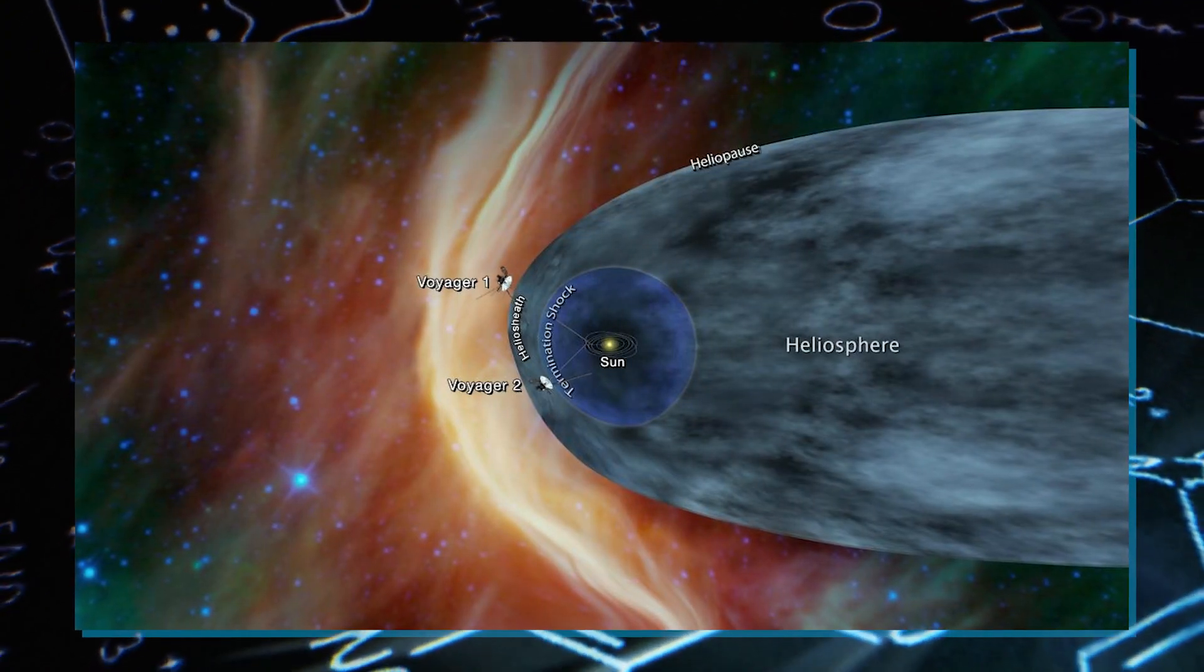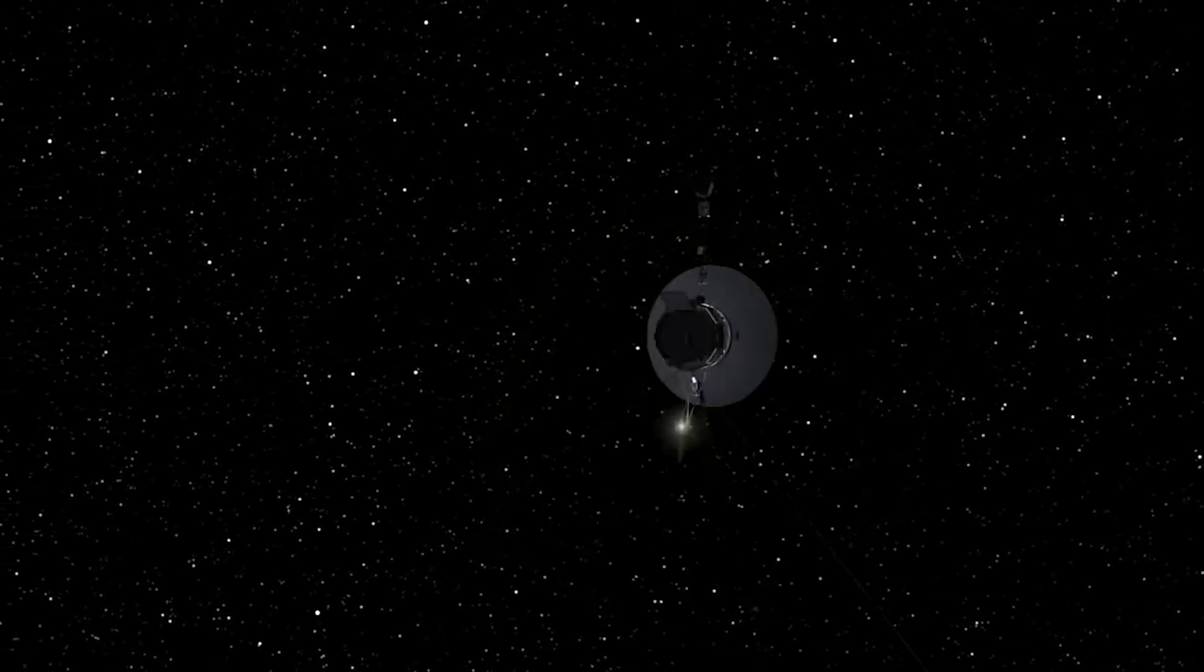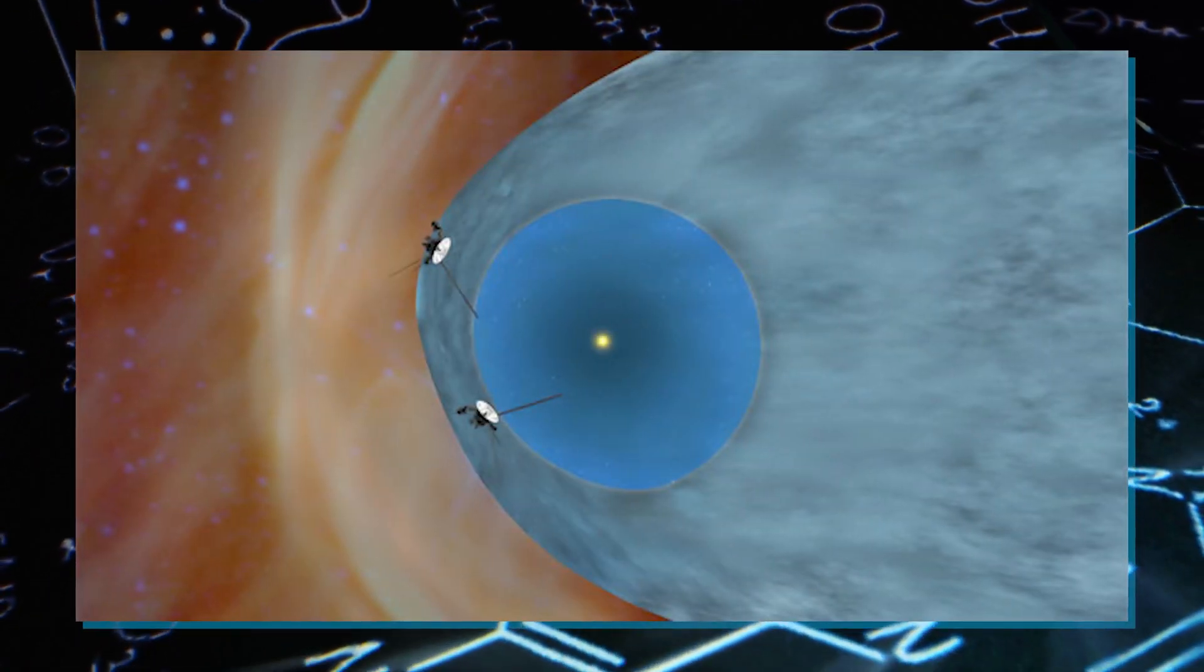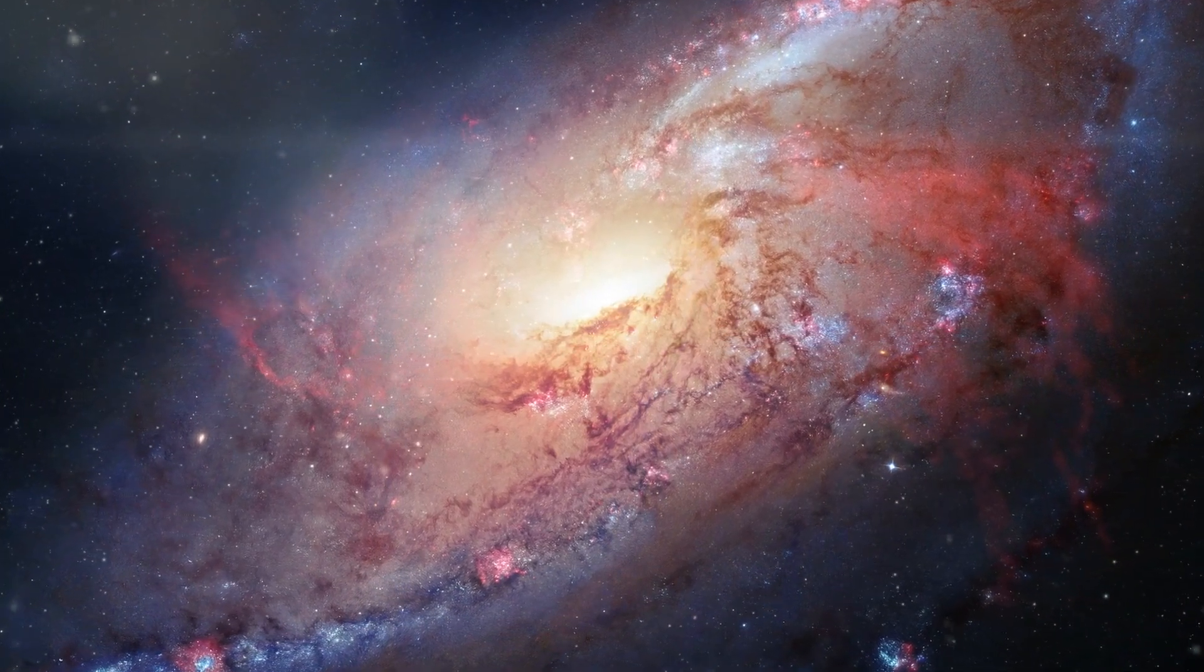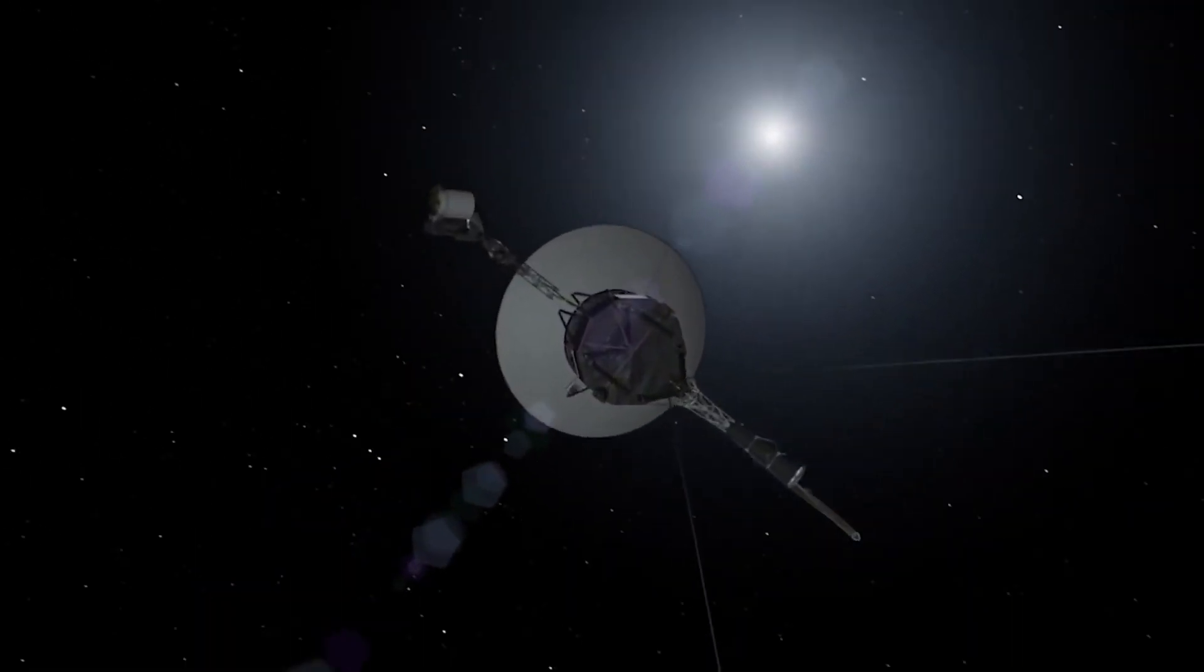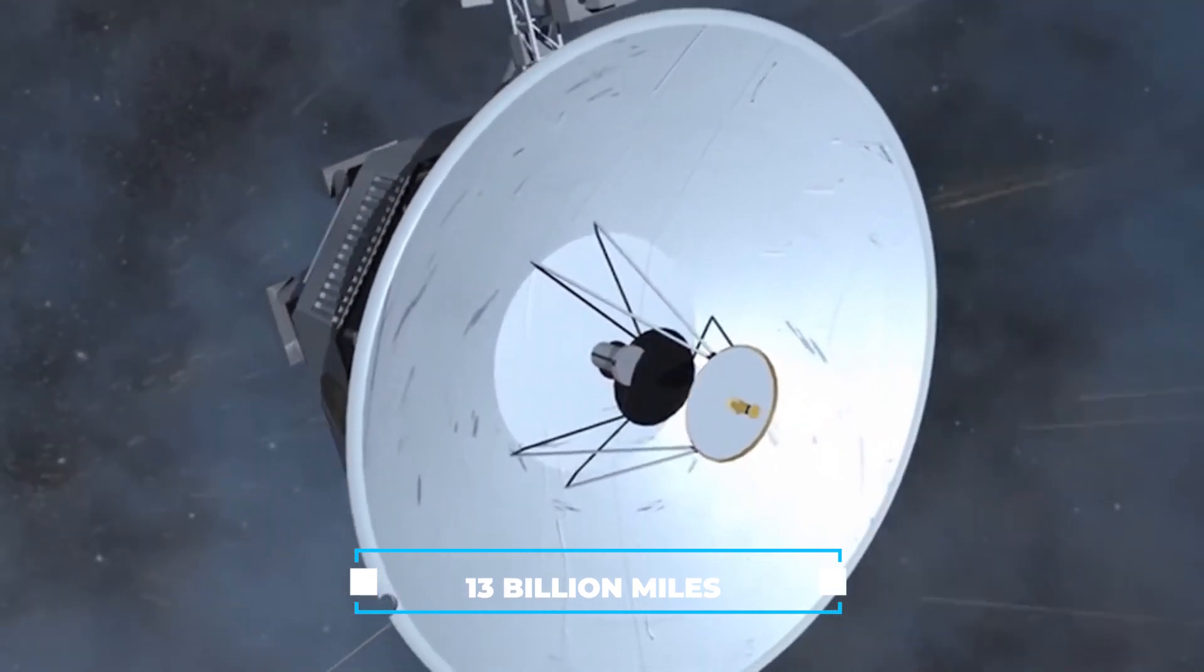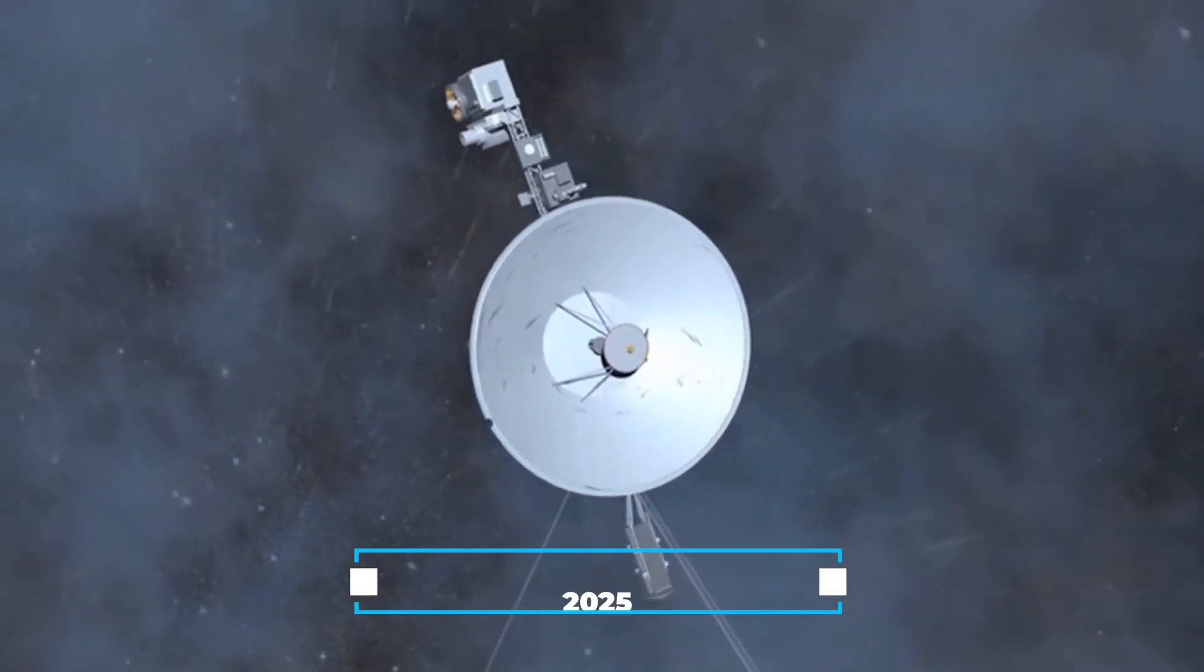Following in the footsteps of Voyager 1, Voyager 2 detected the heliopause and crossed into interstellar space in 2018. This milestone was of great significance to scientists, enabling them to investigate the structure of our galaxy and beyond. Voyager 2 continues to transmit valuable data to Earth from over 13 billion miles away and is expected to remain operational until 2025.